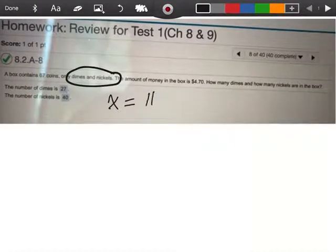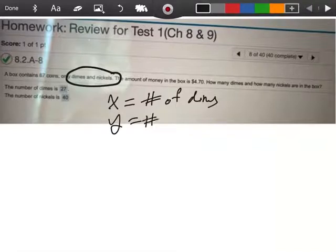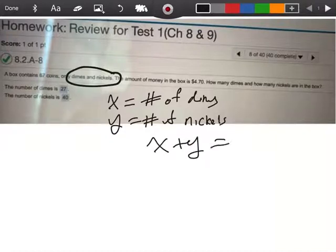So let's let x be the number of dimes, and let's let y be the number of nickels. So x plus y, the number of dimes and the number of nickels added together is going to give me 67, right?